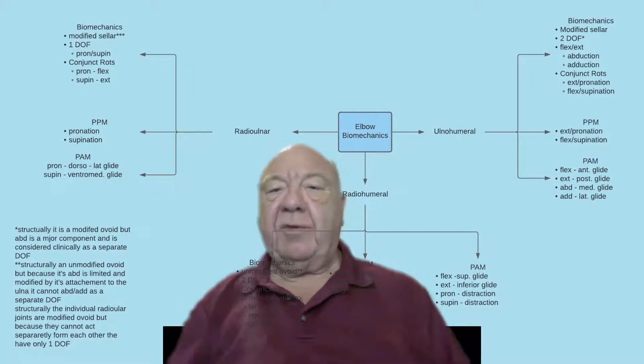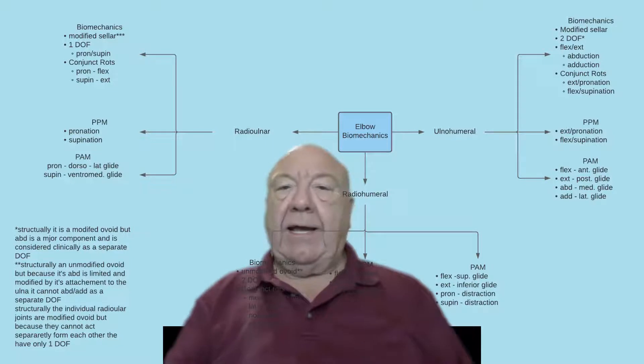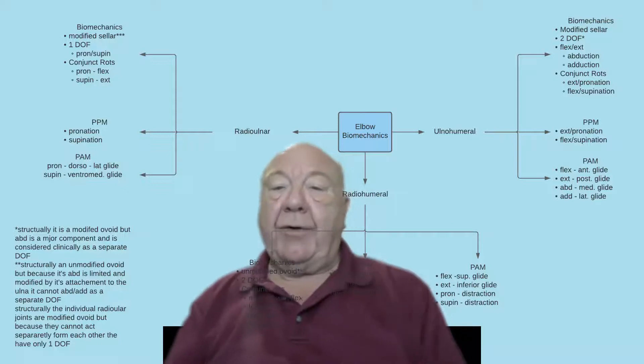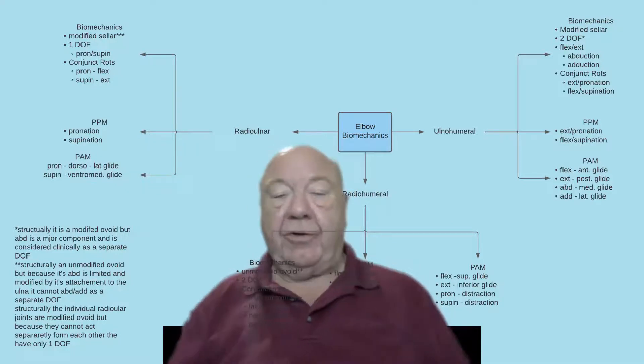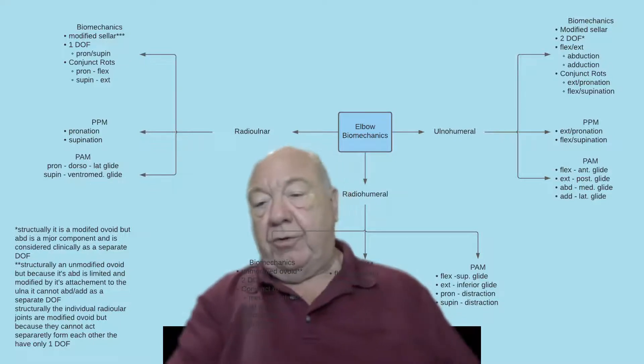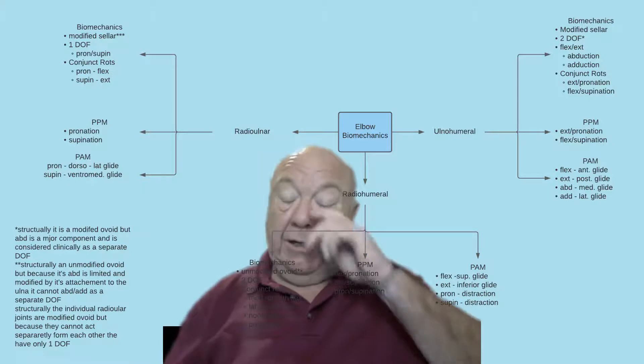Some of the biomechanics we learned previously: how to apply conjunct rotations, degrees of freedom, surface shapes, and directions of arthrokinematics versus osteokinematics. We'll use the elbow as an example. The elbow is an interesting joint, which is code for complicated.